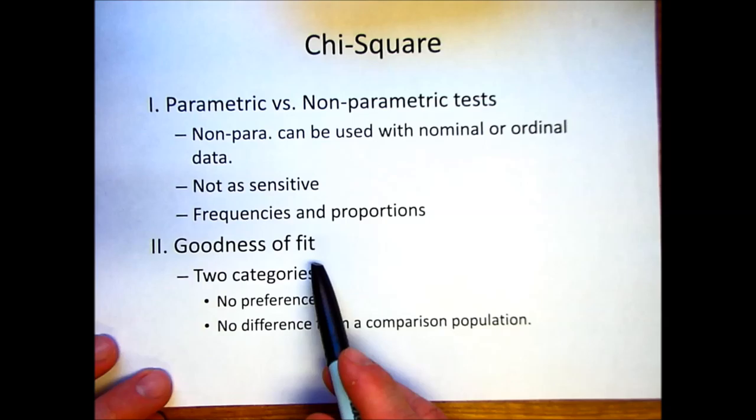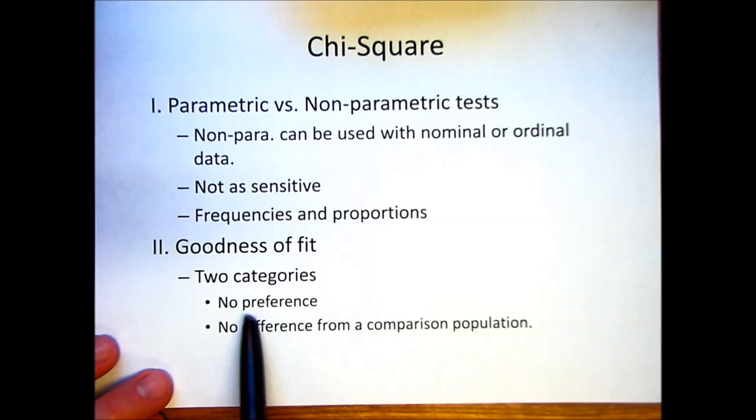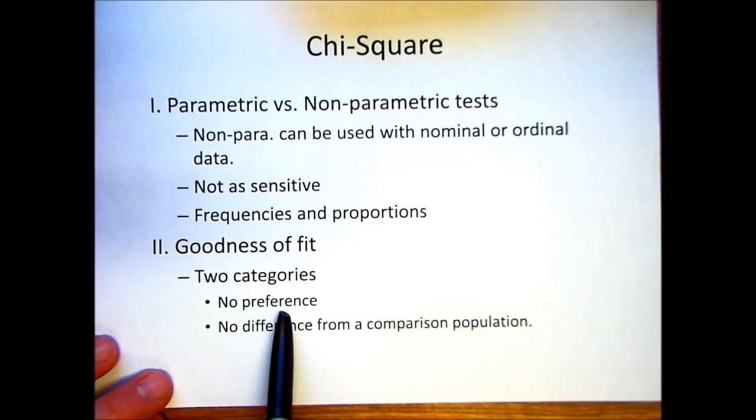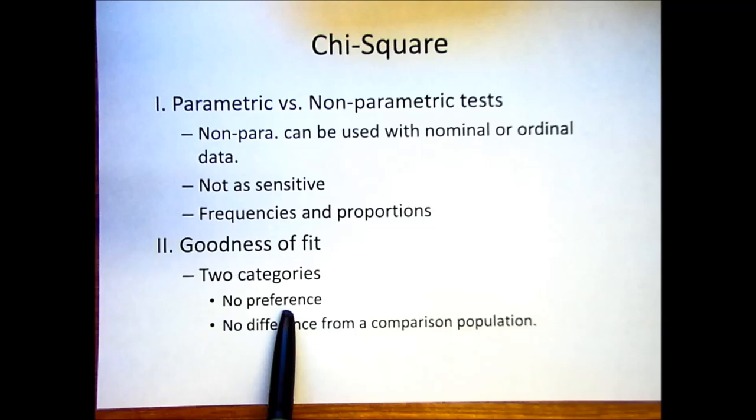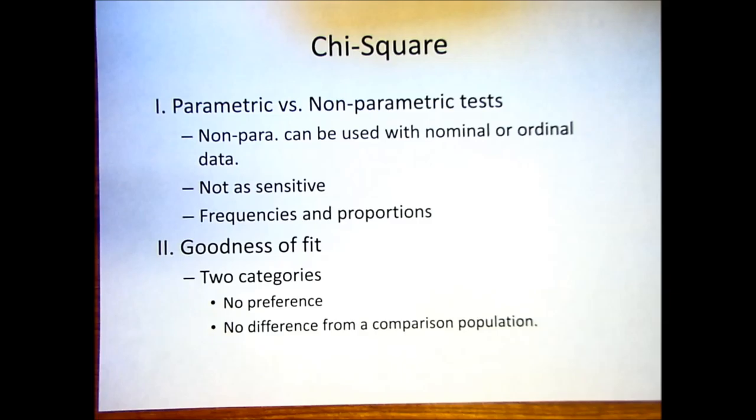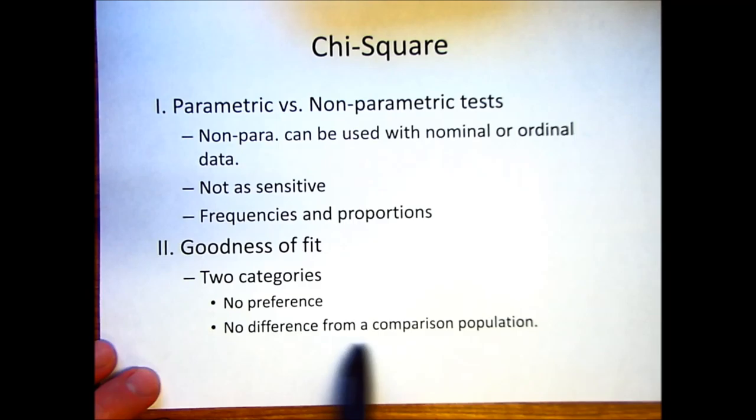The first type of chi-square tests that we're going to talk about are the goodness of fit tests. And there's two different kinds of these tests. One focuses on that there's no preferences between groups. An example of this, you can think of this like the classic taste test of Coke versus Pepsi. And so if there's no preference, we'd expect half of them to, half of the people that choose Coke and half that choose Pepsi. That's an example of a no preference.